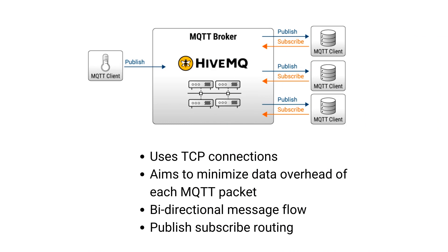The protocol uses TCP connections for reliability, fragmentation, and ordering. It aims to minimize the data overhead of each MQTT packet, making it lightweight and less resource-intensive. MQTT supports bi-directional message flow, meaning data can flow from MQTT clients to subscribers, and commands can flow back via the same TCP connection. The protocol also supports publish-subscribe routing, which allows easy addition of more consumers and producers of data.